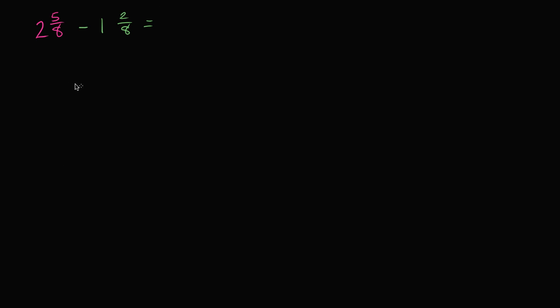Well, we could rewrite this. We could write the numbers on top of each other. This is 2 and 5 eighths. Actually, let me write them a little bit further spaced apart. 2 and 5 eighths minus 1 and 2 eighths.